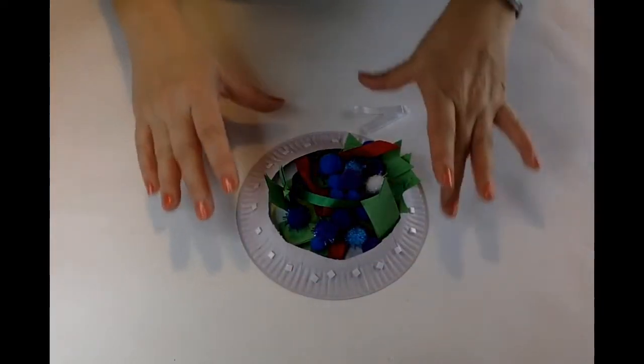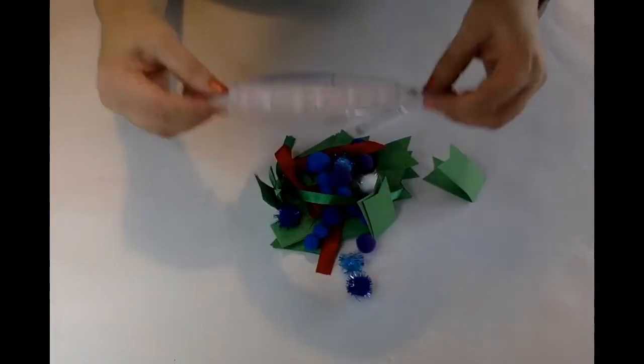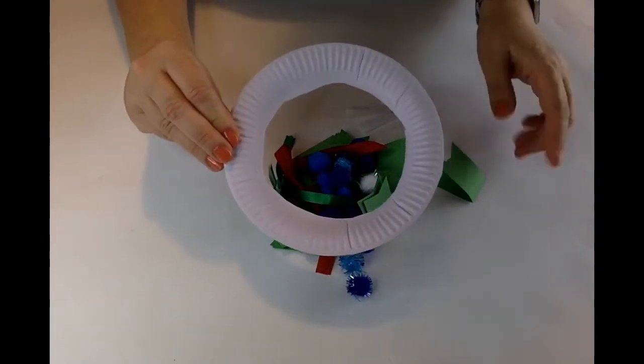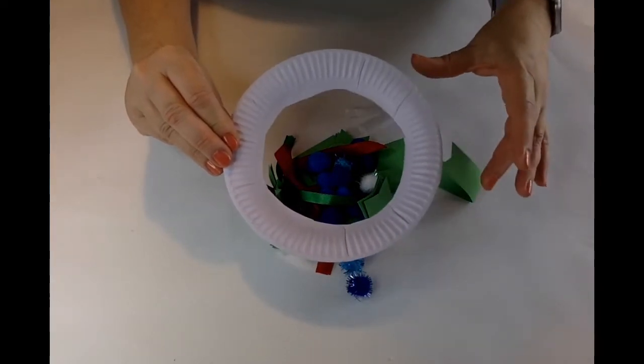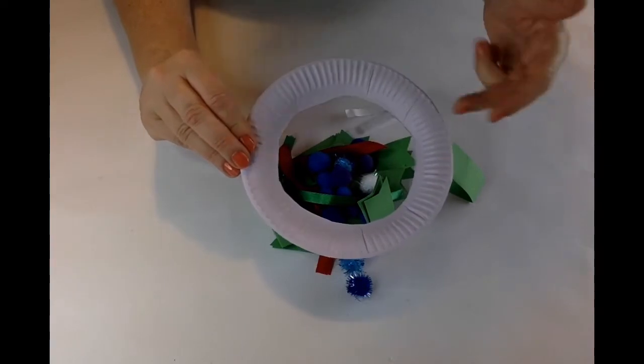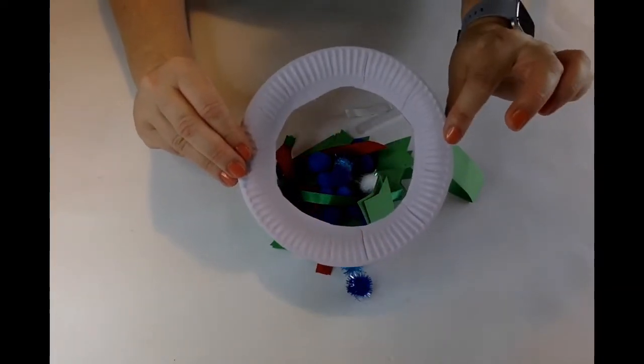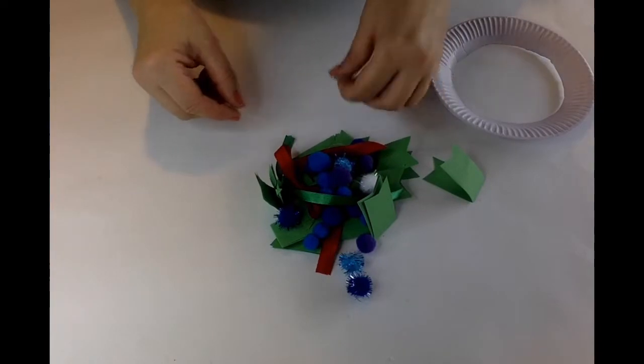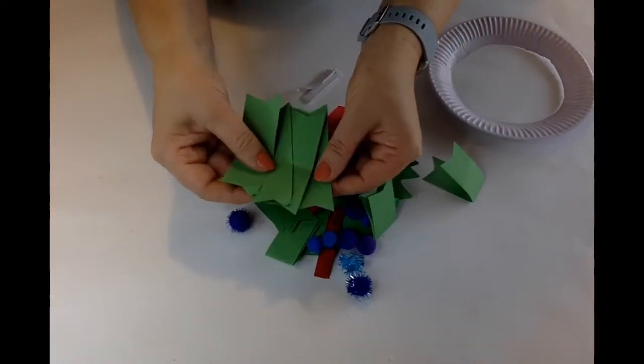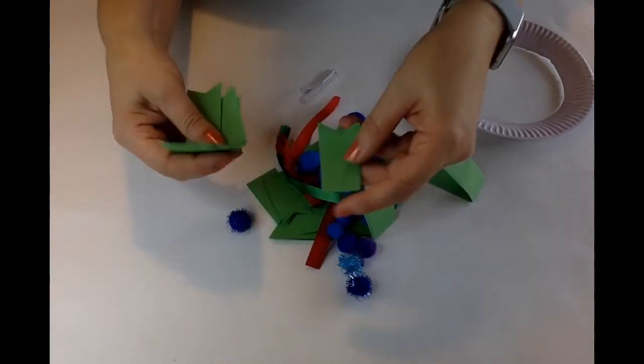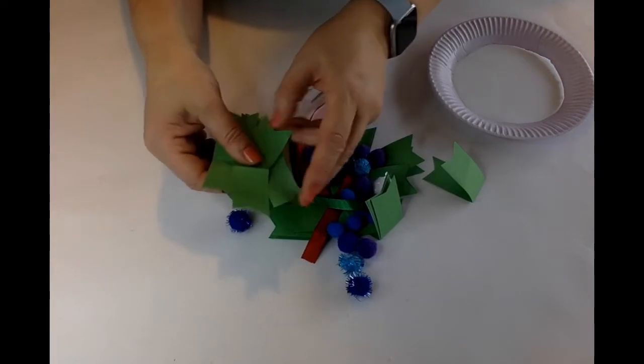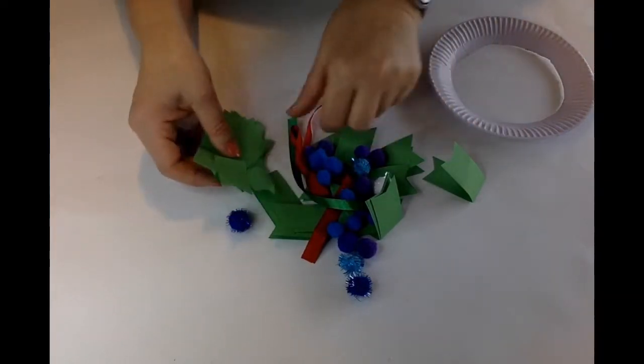Inside your pack you should have a plate that's had the middle cut out which is going to be the base of your ring. Don't worry if the middle is a bit wonky because you'll cover that up. You should have some blue glue dots and lots of pieces of green card which will form the outside of your ring.